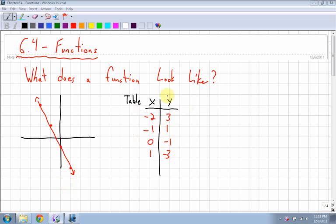Here's another example of a function. We have a table of values of the straight line. We have negative 2, 3, and also we could convert this table of values into a series of points. That's negative 2, 3, negative 1, 1, 0, negative 1, and 1, negative 3.